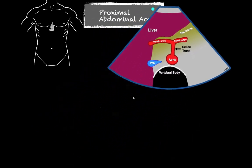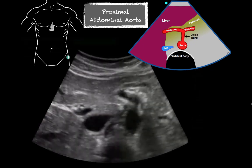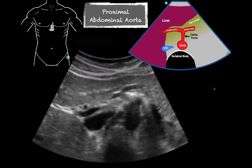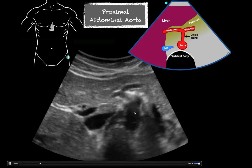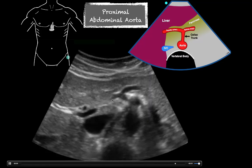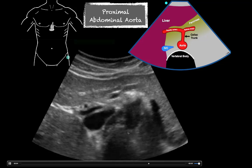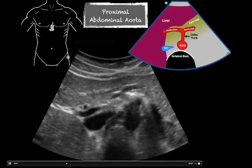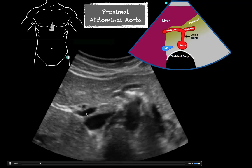Here in the live image we can see that seagull sign. Here's our aorta, and the celiac trunk is coming up — here's our splenic artery going this way and our hepatic artery here. Here's our vertebral body. We don't quite see the hyperechoic line but we can tell it's there. Here's our IVC, and this is going to be our splenic vein coming across — we'll talk about that more on the next clip.